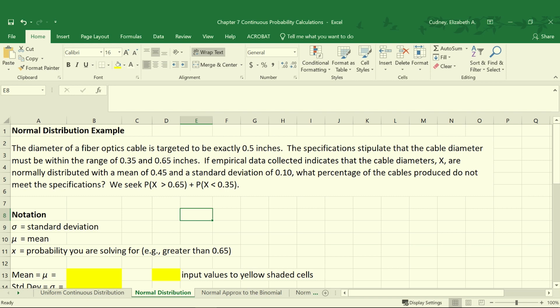Let's suppose that we have the diameter of a fiber optics cable, and the target for the specification is exactly 0.5 inches. Our specifications stipulate that the cable diameter should be within the range of 0.35 and 0.65 inches. We're going to collect data, and that data indicates that the cable's diameters, which is our x value, is normally distributed with a mean of 0.45 and a standard deviation of 0.10.